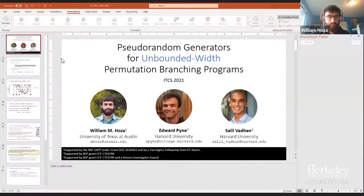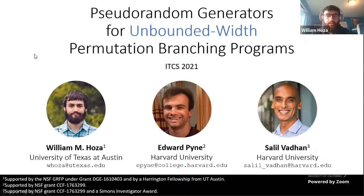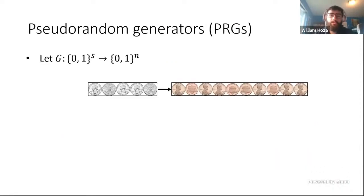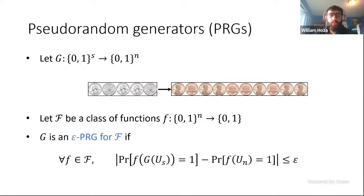Our next talk will be on pseudorandom generators for permutation branching programs. I'm presenting joint work with Ted Pyne and Salil Vadhan about pseudorandom generators. A pseudorandom generator is a function that stretches a short truly random seed out to a long pseudorandom string. We consider some class of test functions f, and the requirement is that for every function in this class, the acceptance probability on a pseudorandom input versus a truly random input should be within epsilon of each other — epsilon is the error of the pseudorandom generator.